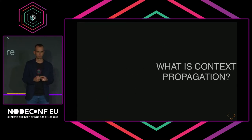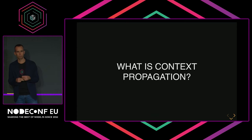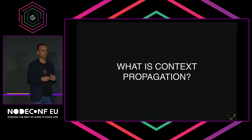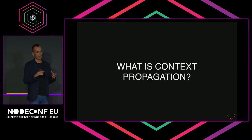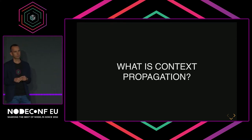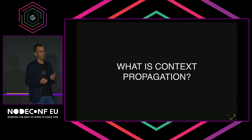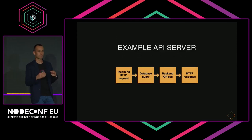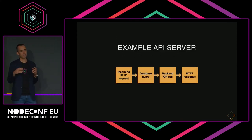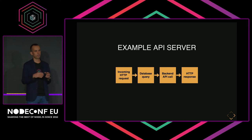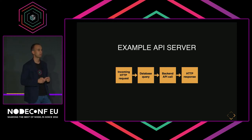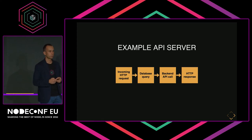So, context. What is context propagation? I'd like to explain this on a simple example. Let's say you are building a REST API server which will get some data from your database, augment this data with some additional information by calling your backend API service, and then return back your response.